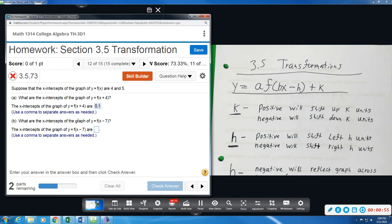What would be the x-intercepts of f of x minus 7? So in the same sense, this minus 7 in parentheses here will shift that right 7 units. So we will add 7 to these two numbers this time.